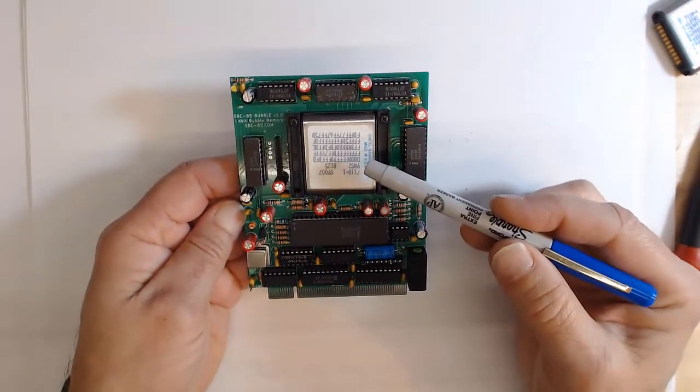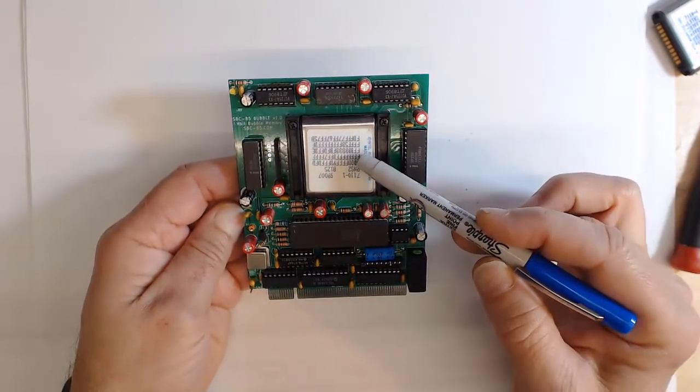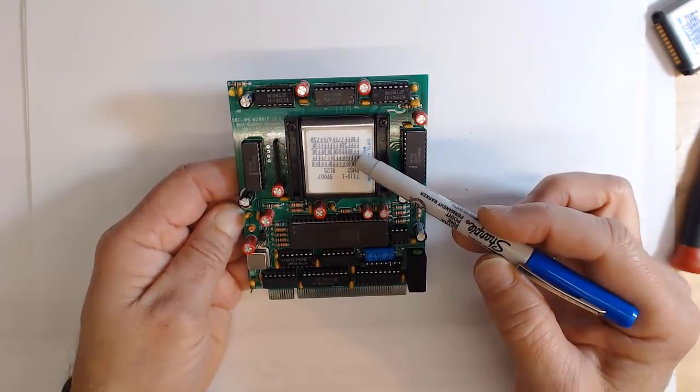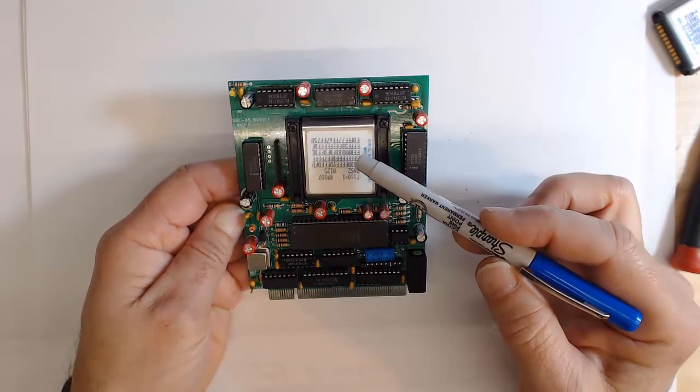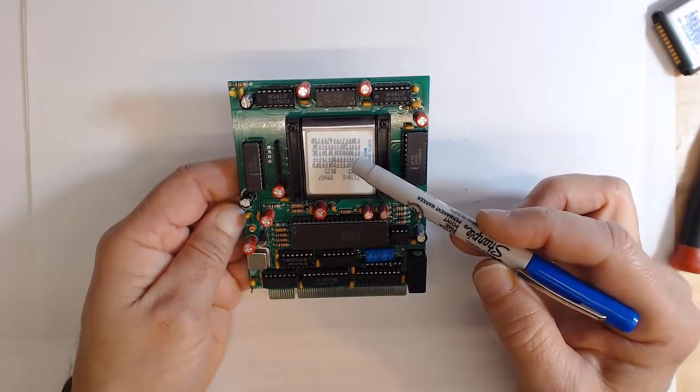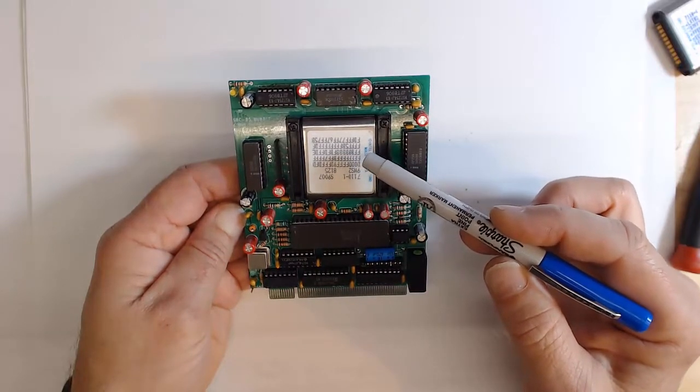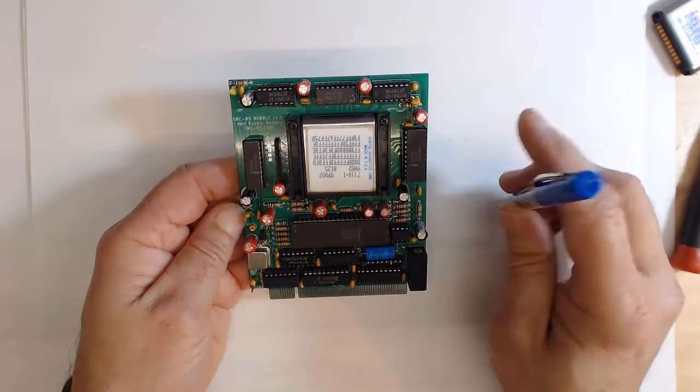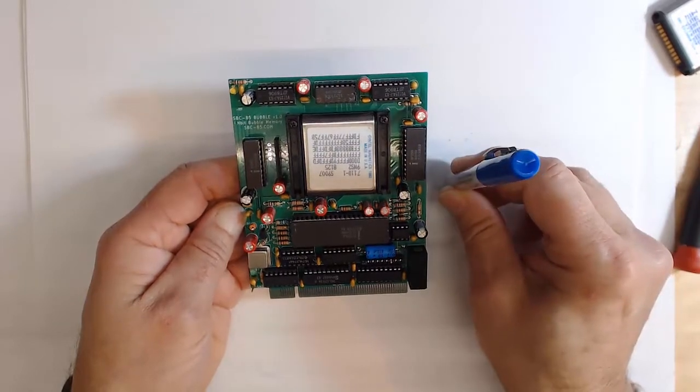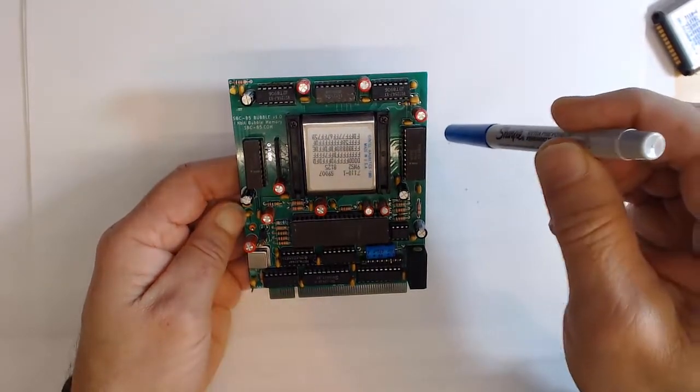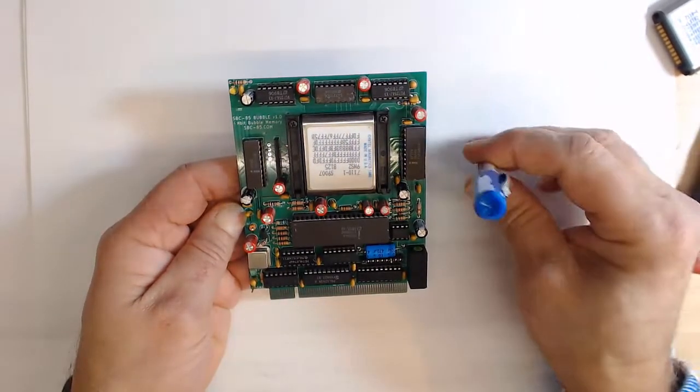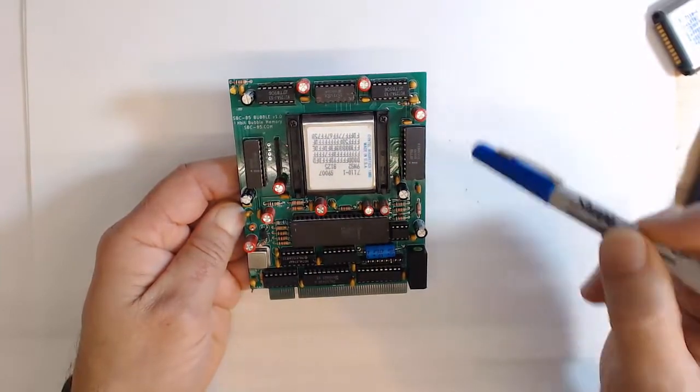As I mentioned, bubble memory is non-volatile, so once we create a bubble in here it's permanent. It's there for many years until we change that from a bubble to a non-bubble. When we're talking about creating a bubble or a non-bubble, we're actually talking about the domain. The domain is either facing up or facing down.